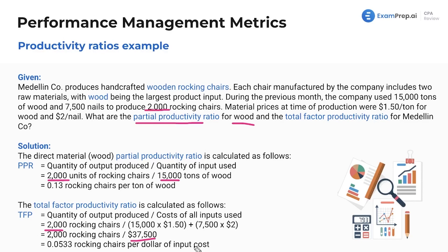I've seen these ratios used in SIMs and in multiple choice. Be ready to tackle them and you'll do fine — nothing crazy here. Maybe the AICPA will use more realistic metrics than $1.50 per ton of wood, but the focus is on making sure you know how to do the questions right rather than making them realistic.